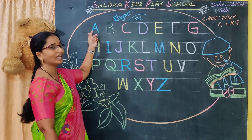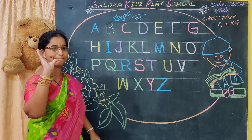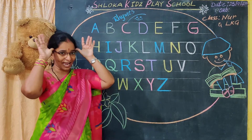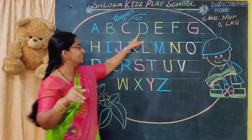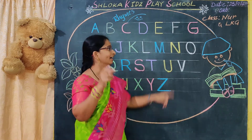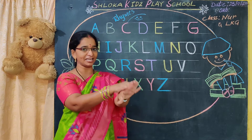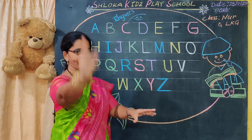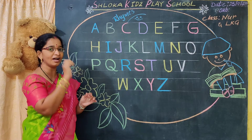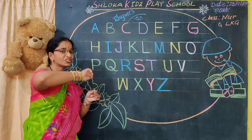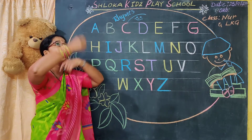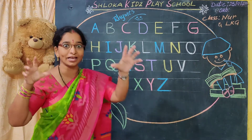See what is this? A for apple. B for ball. C for cat. D for dog. E for egg. F for fish. G for gun. H for hat. I for ice cream. J for jet. K for kite.